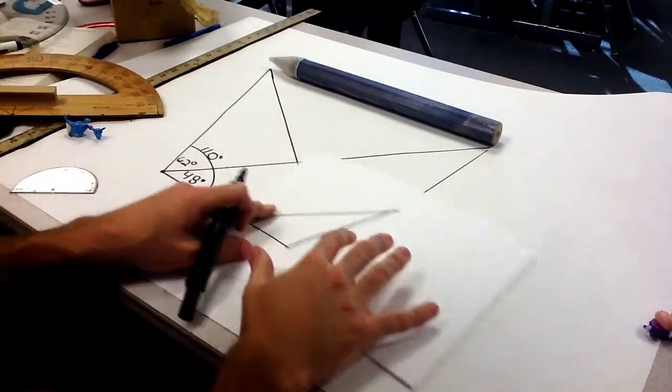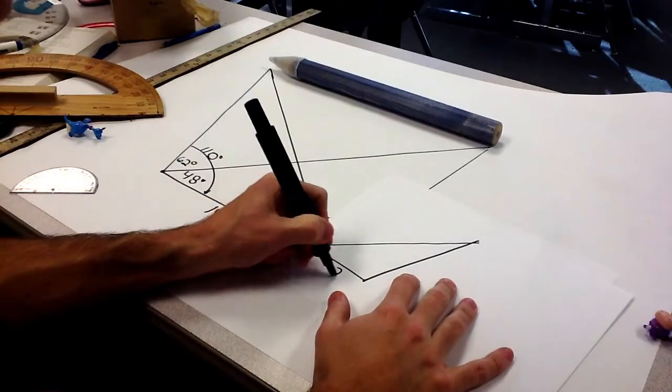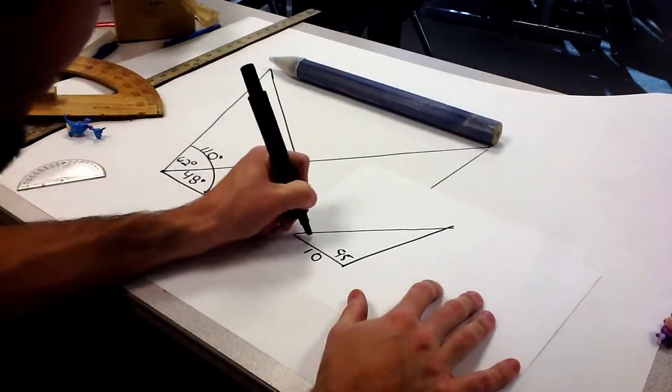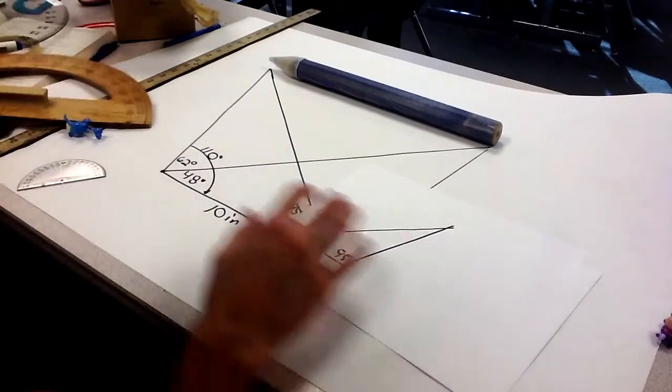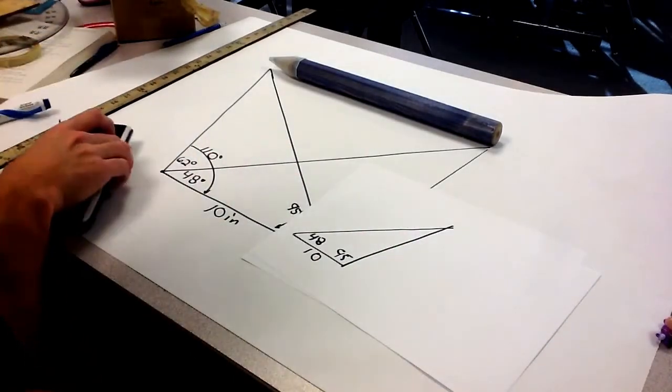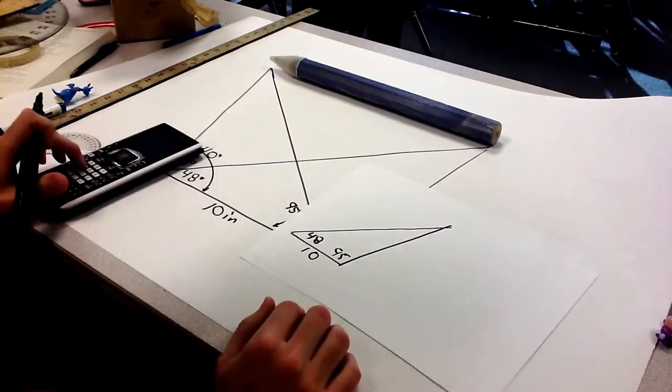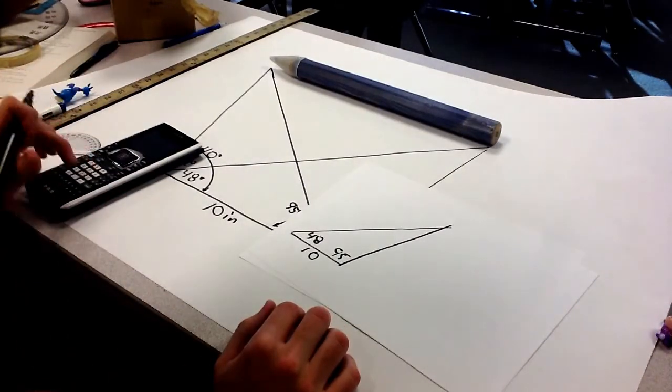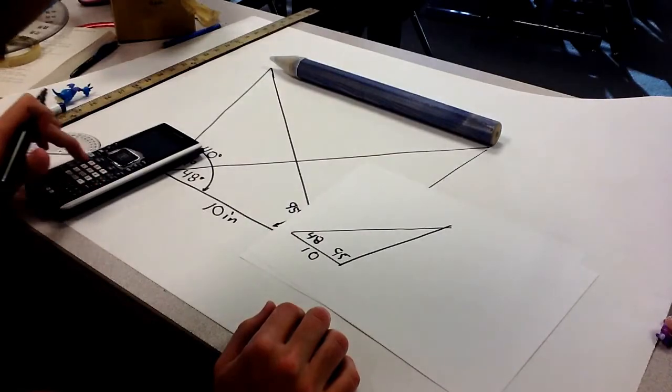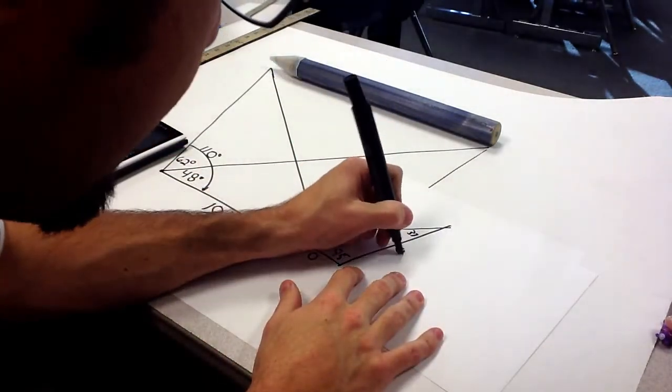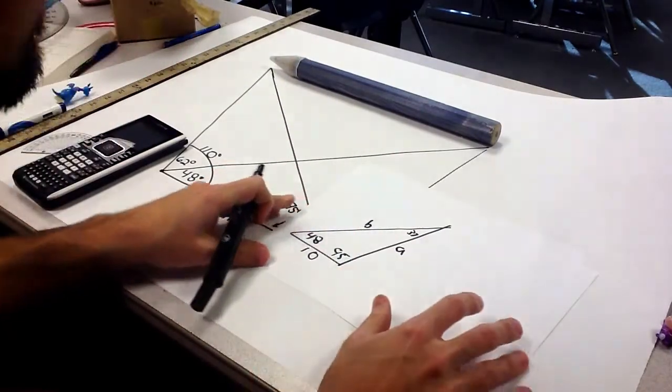So, I have 10 as my bottom side. My angle on the right side is 95. And then a 48. So, I need to figure out what the third angle is. So, we got 48 plus 95 from 180 is 37 degrees. And we're going to label this side A and this side B.